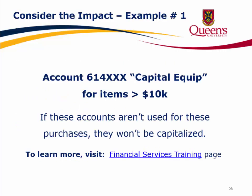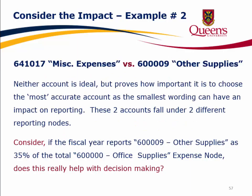Consider the impact. Example 1: Account 614 Capital Equipment for items greater than $10,000 — if these accounts aren't used for these purchases, they won't be capitalized. To learn more, visit the Financial Services Training page. Example 2: Account 641017 Miscellaneous Expenses versus Account 600009 Other Supplies — neither account is ideal, but it shows how important it is to choose the most accurate account, as even slight wording differences can have an impact on reporting. These two accounts fall under two different reporting nodes.